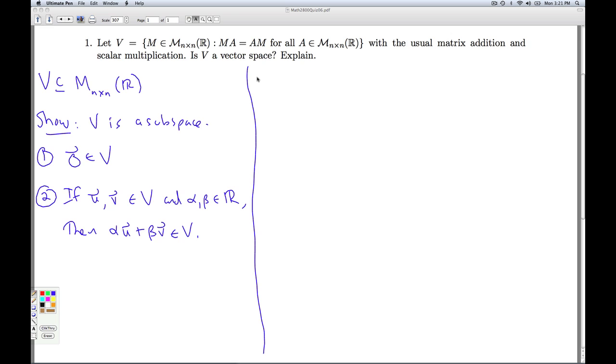Okay, so how do we check this? Zero is in V. Well, we have to go back. What's the zero vector for the n by n matrices? It's the n by n zero matrix, which we denoted this way. So how do I show something is in V? When I take it times an n by n matrix, it has to be the same as that matrix times it.